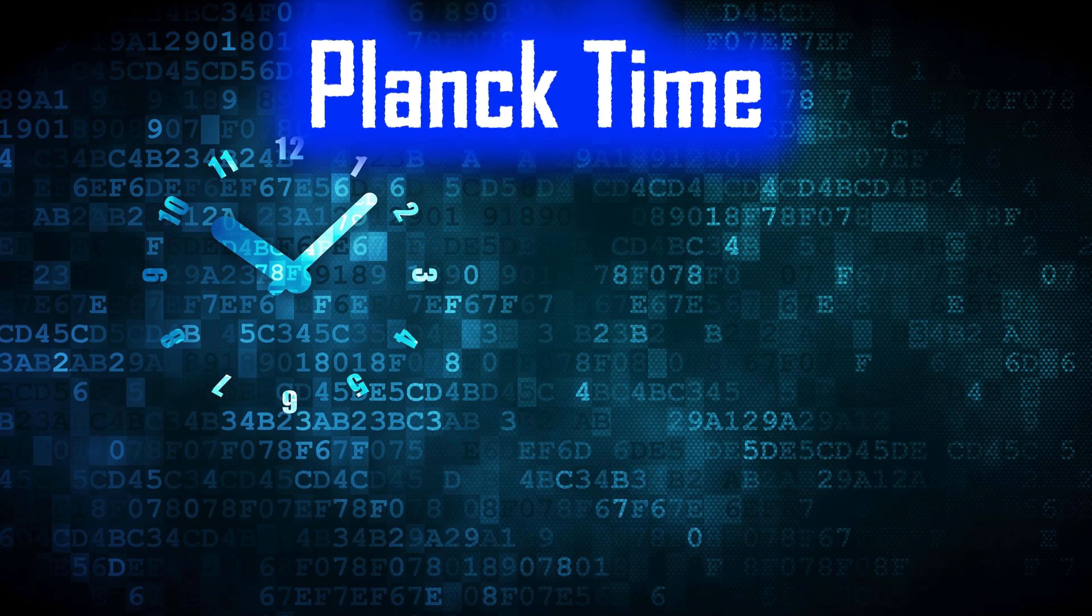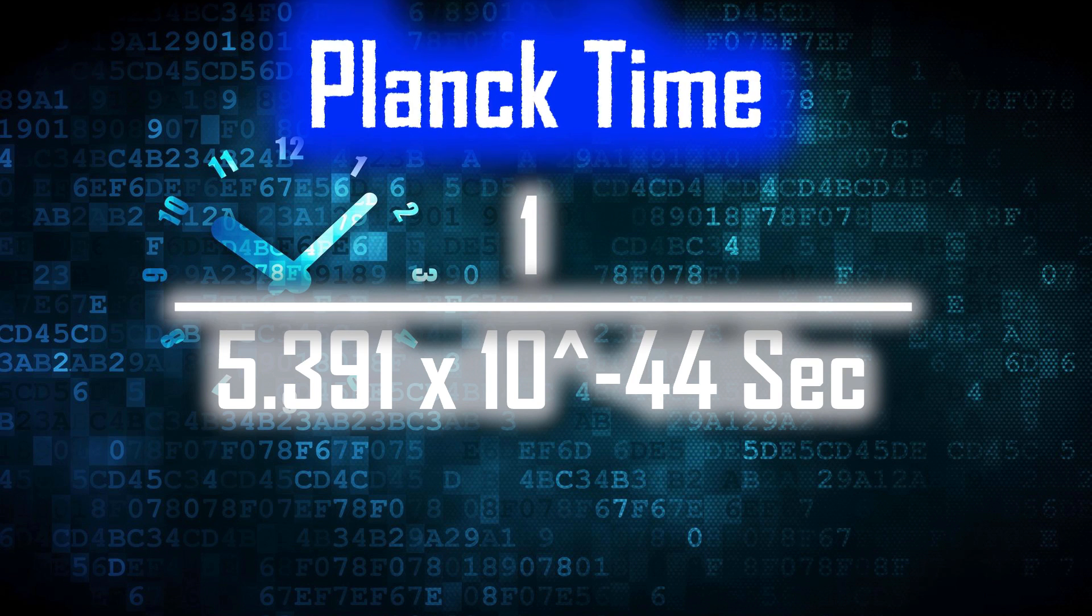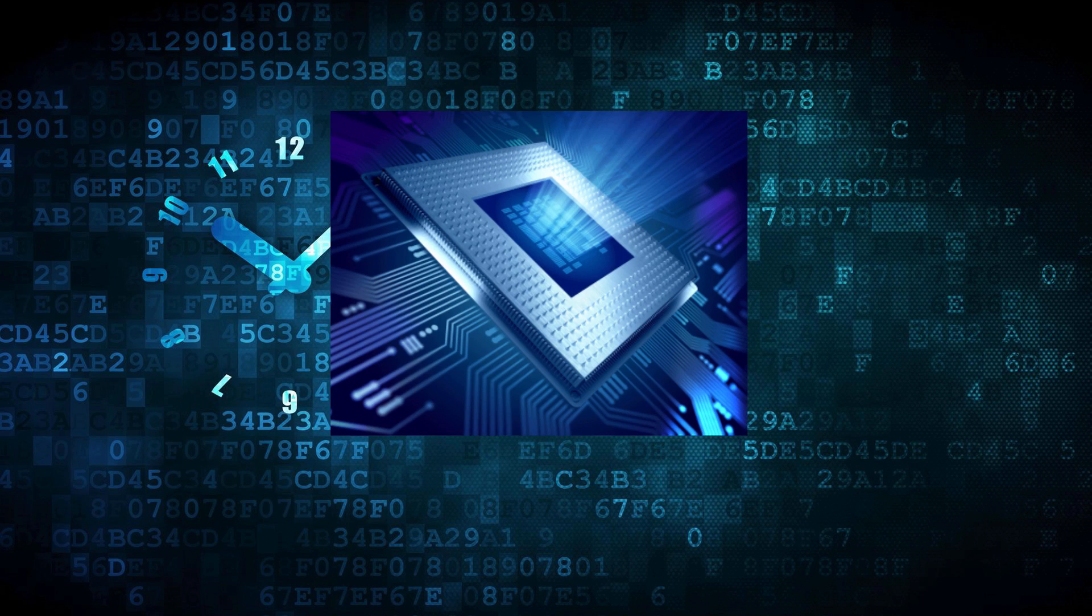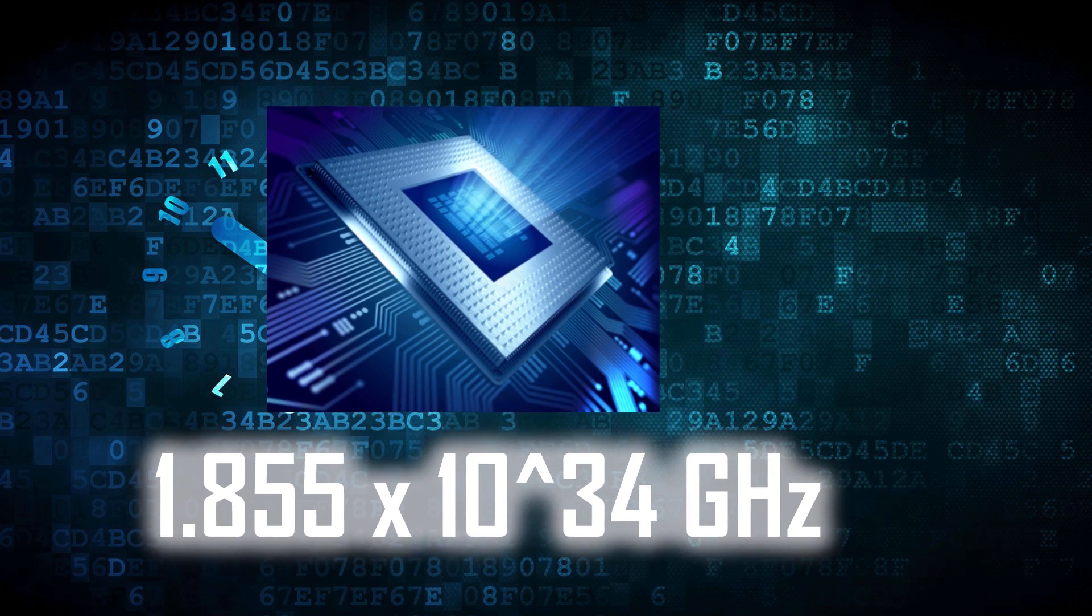Planck time is the smallest time interval possible in our universe, which is this much seconds. By taking reciprocal of it, we get the clock speed of the processor required to run our universe, which is this much gigahertz. Now these numbers are unimaginably huge.